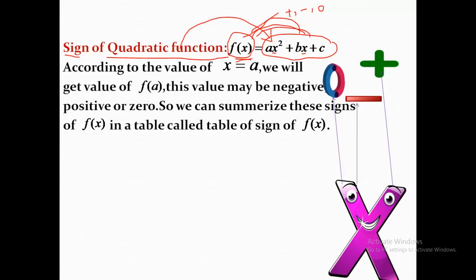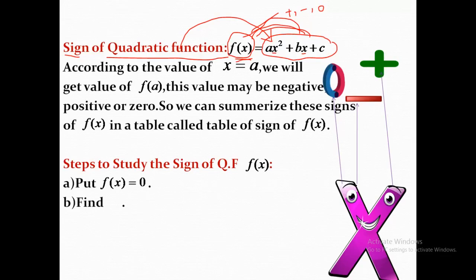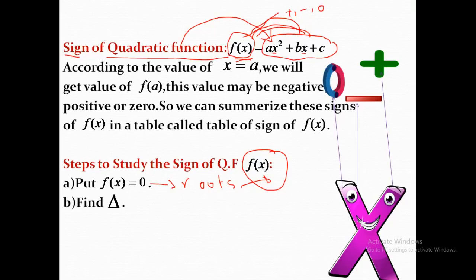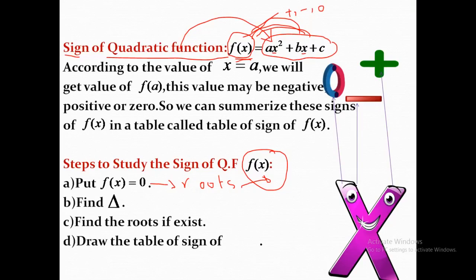The value of f(x) gives us the sign of f(x). To study the sign of f(x), we have some steps to follow. First, we have to know the roots of f(x), because the roots tell us where f(x) is zero. First step: put f(x) = 0. Second step: find delta, which is b² - 4ac. Then, according to the value of delta, we find the roots if they exist. If delta is less than zero, there is no root. Then we draw the table of signs.